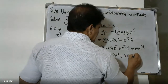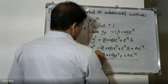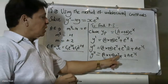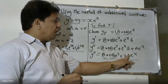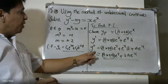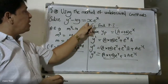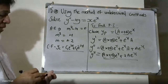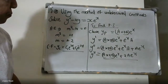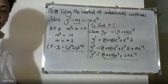So y double dash equals ax plus b into e raise to x plus 2a into e raise to x plus a into e raise to x. We now substitute y double dash and y into the original differential equation.